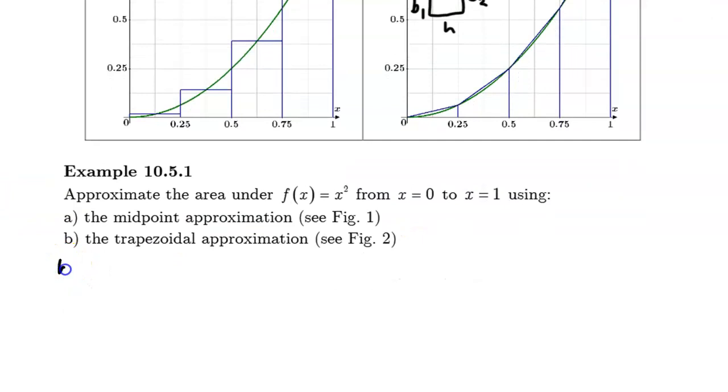So this is part B, the trapezoidal approximation. The area of a trapezoid is equal to half the height. Now the height, since it's rotated on its side, is 0.25. So I'm just going to actually write one quarter. And then basically that's half times the height times the sum of the two bases for each of these trapezoids.